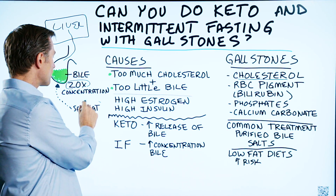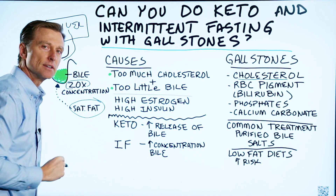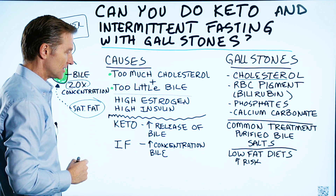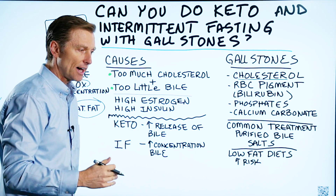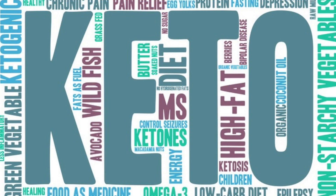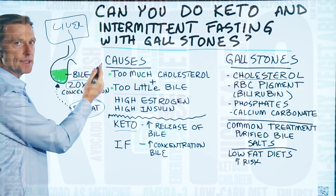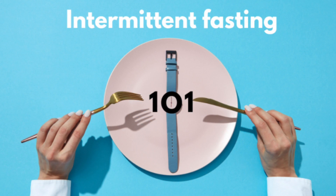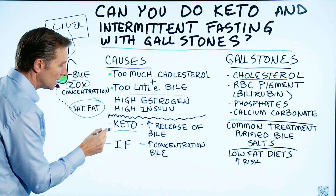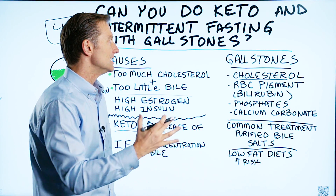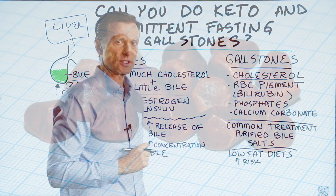Guess what? Saturated fats. It's saturated fats that trigger bile release — and guess what a ketogenic diet is? It's a high-fat, low-carb diet. So when you do keto, you're going to be releasing a lot of this bile on a regular basis. If you add intermittent fasting, you're going to concentrate the bile. So these two things — keto and IF — done healthily, actually decrease the risk of gallstones.